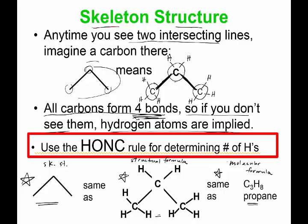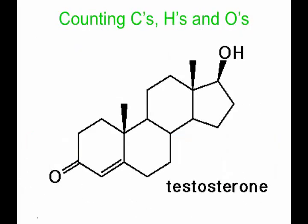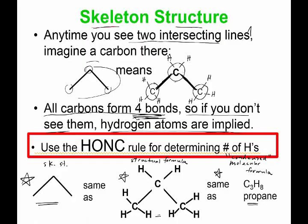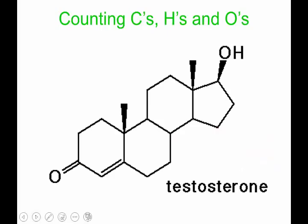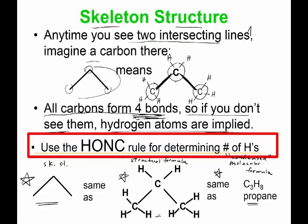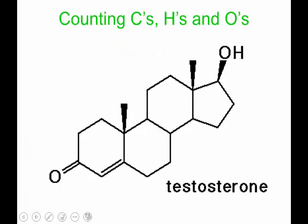You might even see it called a condensed molecular formula. Let's practice this concept with a skeleton structure of a hormone — testosterone. I want to go from this giant molecule and write its condensed molecular formula. We're going to count all the C's, H's, and O's and condense it into a molecular formula.